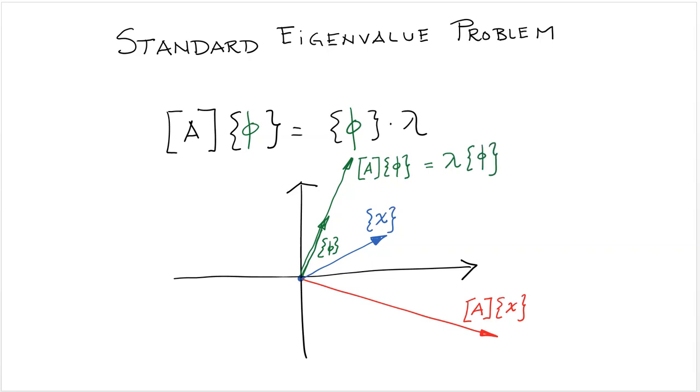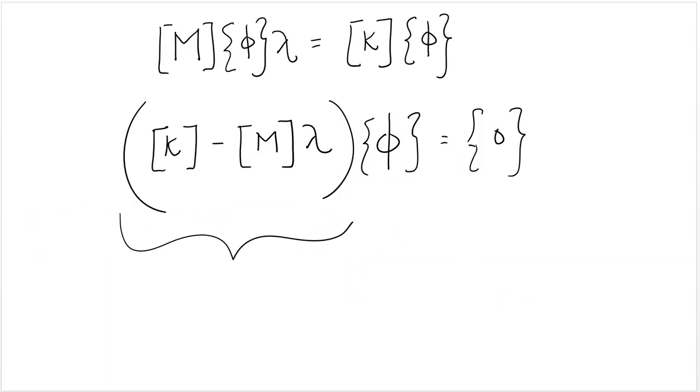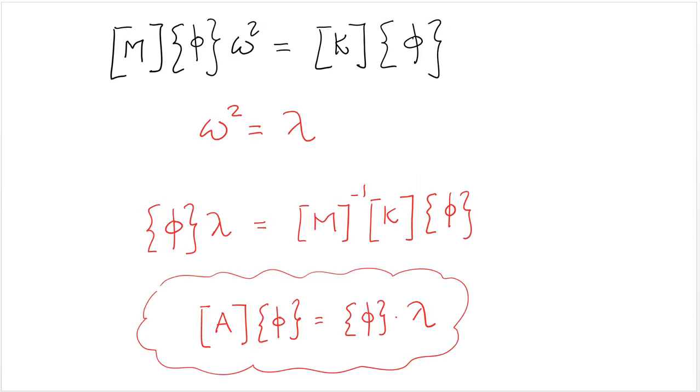In this case, the scalar is lambda, which is what we call the eigenvalue. So, these special vectors phi are called eigenvectors, and these scalar lambdas are called eigenvalues. And these are extremely important for many applications. I'm sure you've seen this eigenvalue problem before, and we're going to see how it relates to structural dynamics now. So, as we said before, this problem here can be recast as a classic eigenvalue problem.